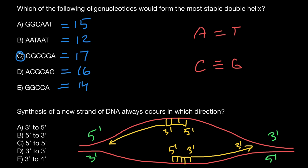And also on the other strand of the DNA it would grow from 5' to 3'. It's also going to grow in a different direction, but it's going to grow discontinuously. In order to grow in the other direction, we need more primers. Still, overall, the growth is going to be in the 5' to 3' direction.